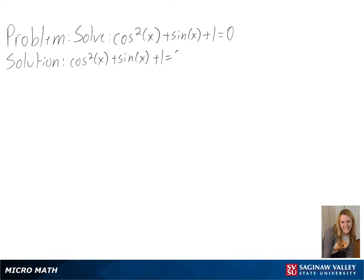To solve our trig equation, we first can rewrite cosine squared of x as 1 minus sine squared of x, since these are the same value.